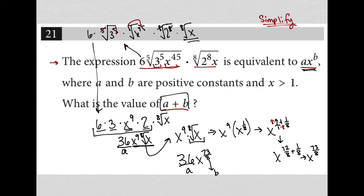36 plus 73/8. Again, I need to have a common denominator, so I'm going to treat this like a 36/1. I'm going to multiply top and bottom by 8.